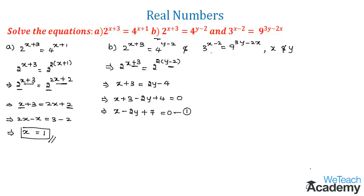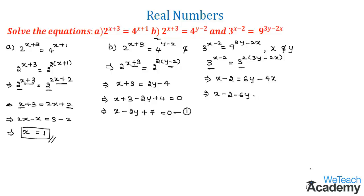For the second equation, we write 3^(x-2) = 3² raised to (3y-2x). Equating powers gives x - 2 = 6y - 4x. Bringing all terms to the left hand side: x - 2 - 6y + 4x = 0. Adding like terms x and 4x gives 5x - 6y - 2 = 0. This is Equation 2.